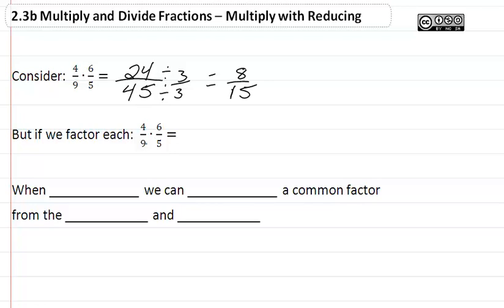Notice that 6 and 9 have a common factor of 3. So if we took 6 and divided by 3, we would get 2. And 9 divided by 3 would give us 3. Then if we multiplied, we would get 8/15, and we would have an answer that's already reduced.